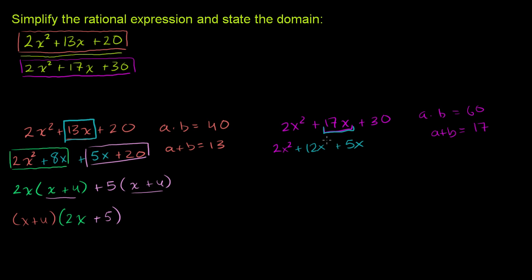That adds up to 17x. And when you multiply 12 times 5, you get 60. And then plus 30. And then on this first group right here, we can factor out a 2x. So if you factor out a 2x, you get 2x times x plus 6.